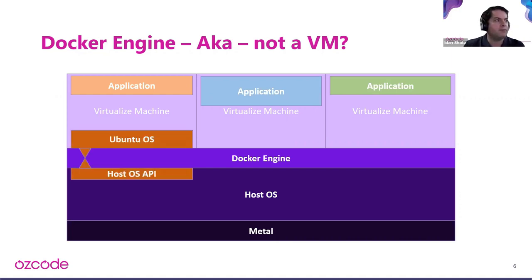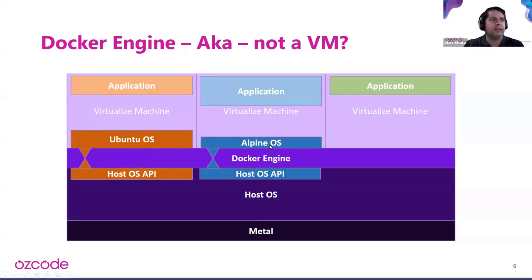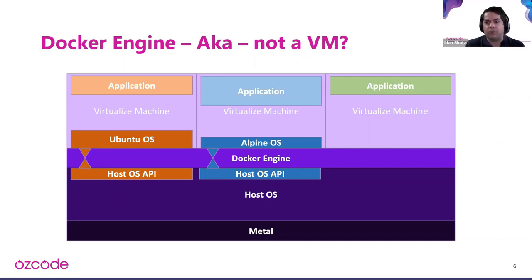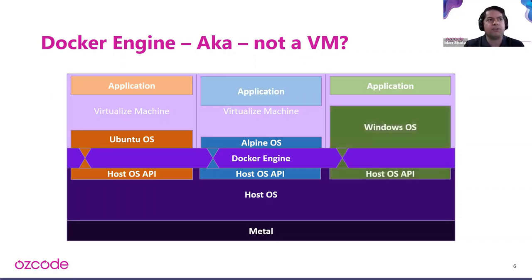That is really the big innovation of why Docker has become mainstream: how can we reduce the waste of running the guest operating system? Instead of loading the entire kernel, Docker loads a thin layer that takes the functionality of that OS and tunnels it through the Docker engine to the host OS. The Alpine OS in Docker is just a five megabyte image — extremely small.